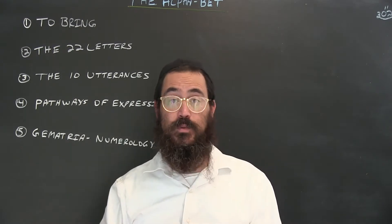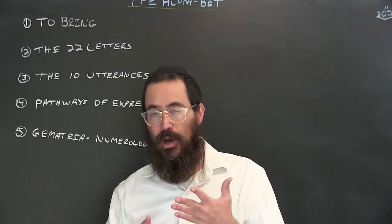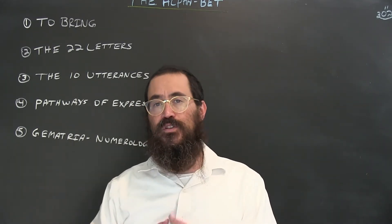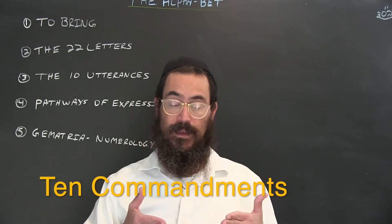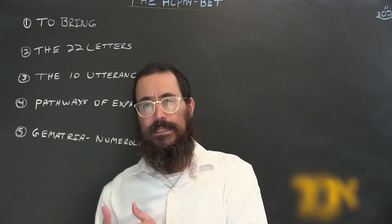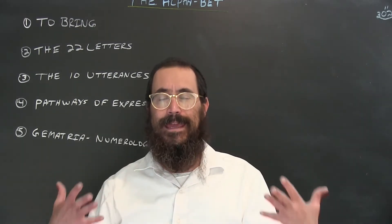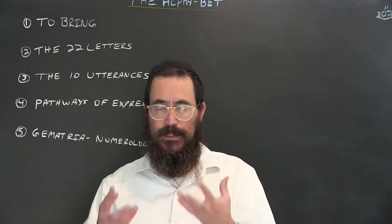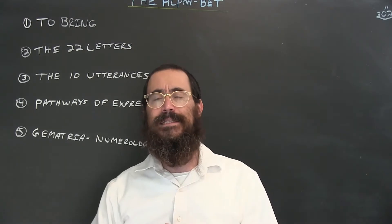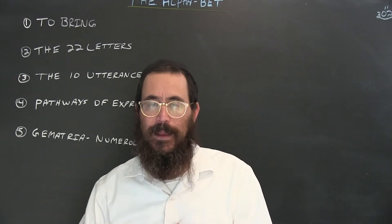In Hebrew we have various expressions for the word 'to say.' 'Ma'amar' means to say — there are 10 utterances that God created the world with. There's also 'asara dibrot,' the 10 Commandments, where 'daber' is a word meaning to speak, to convey. Our sages tell us that 'omer' is a more feminine type of expression, with the word 'aim' inside of it, while 'daber' is used when God spoke to the Israelites on Mount Sinai — a more direct, stronger form of expression.